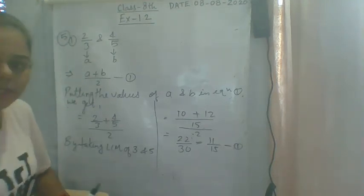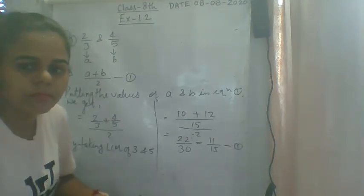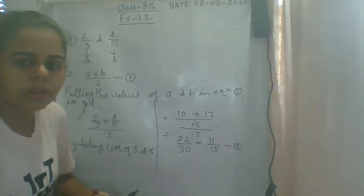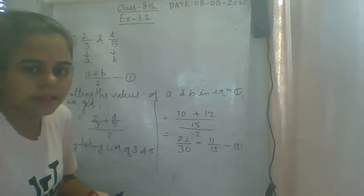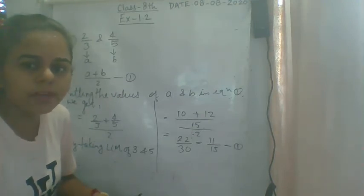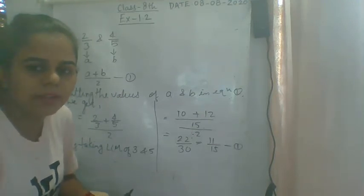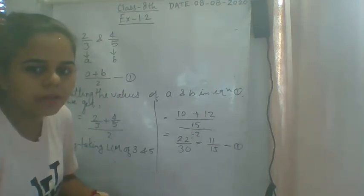The next part: find 5 rational numbers between minus 3 by 2 and 5 by 3.